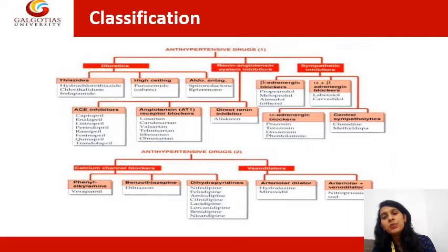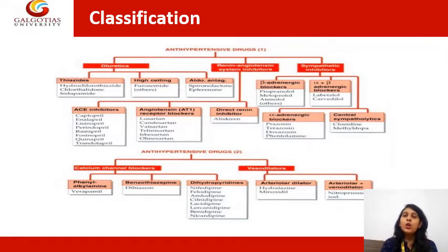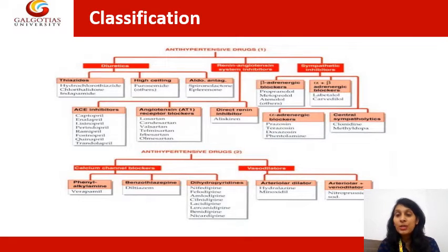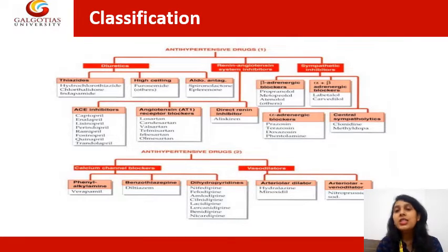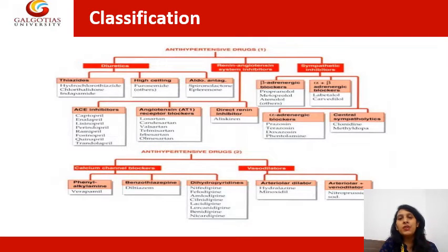The receptors for the sympathetic nervous system include alpha receptors and beta receptors. Alpha is further classified into alpha-1 and alpha-2, and beta into beta-1, beta-2, and beta-3 receptors. Through both receptors your blood pressure is modulated. Specifically, stimulation of alpha receptors also increases blood pressure. When the sympathetic nervous system is stimulated, blood pressure will always increase.